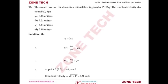Question number 16: The stream function for a two-dimensional flow is ψ = 2xy. Find the resultant velocity at point P(2,3). We know that ∂ψ/∂y = -u and ∂ψ/∂x = v. So ∂ψ/∂y gives u = -2x, and ∂ψ/∂x gives v = 2y. Substituting coordinates: u = -4, v = 6. Resultant velocity = √(u² + v²).